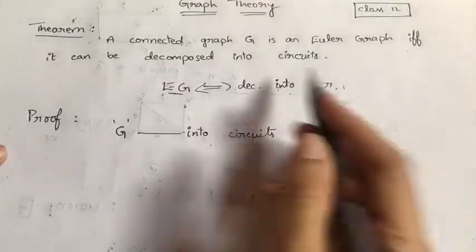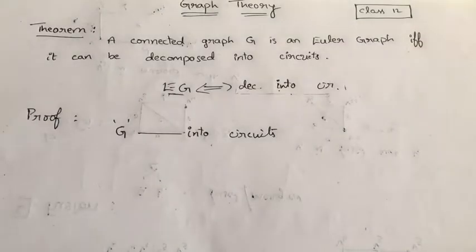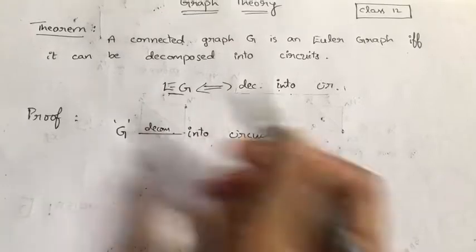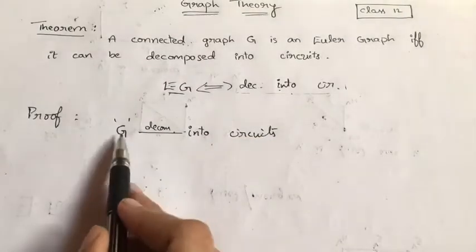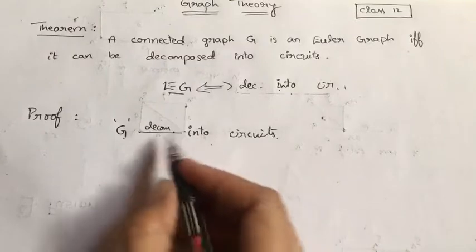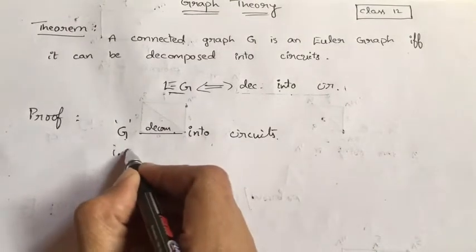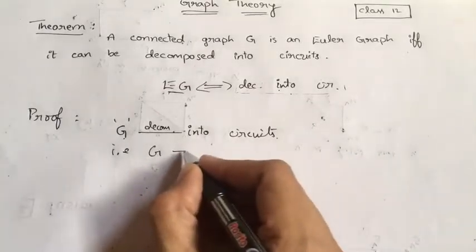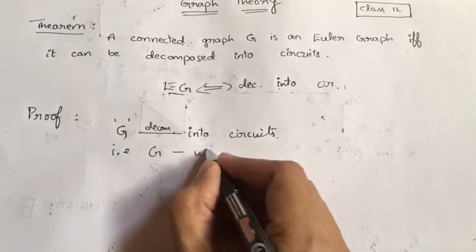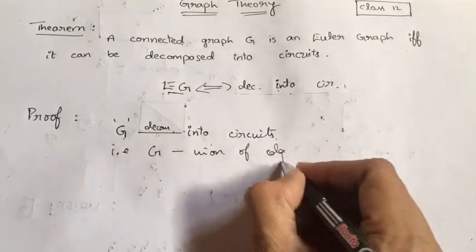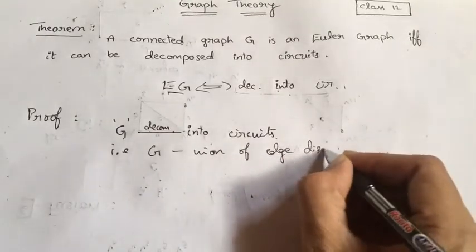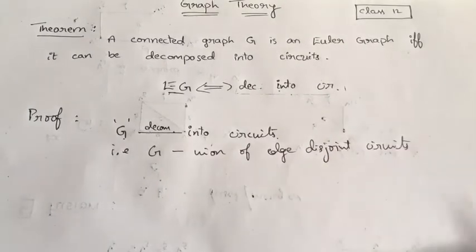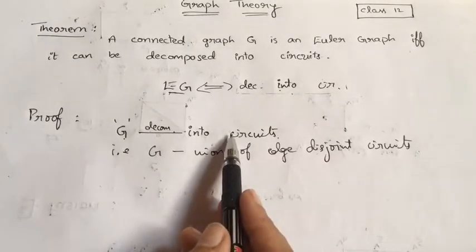Then I have to prove that it is an Euler graph. By the definition of decomposition, if G can be decomposed into circuits then that implies G is the union of edge disjoint circuits.